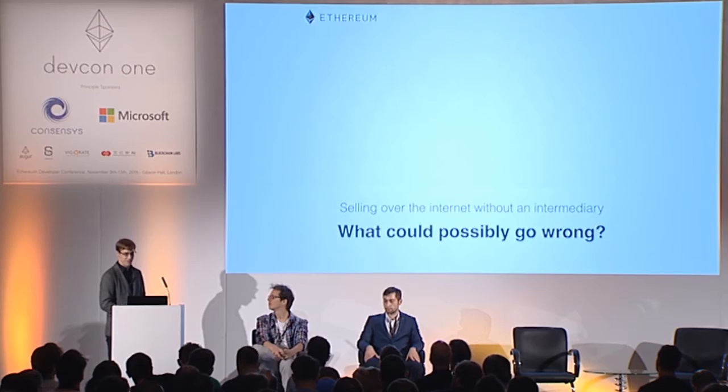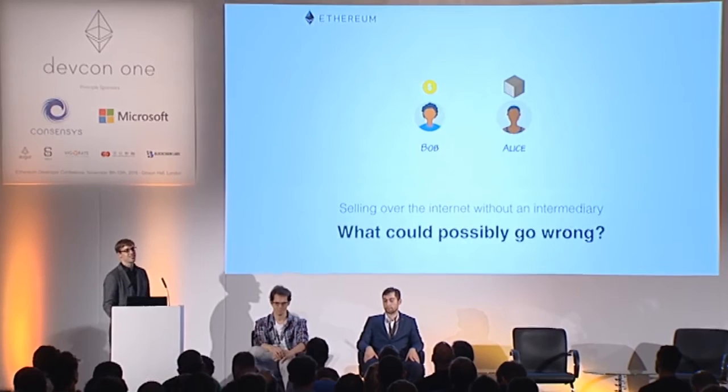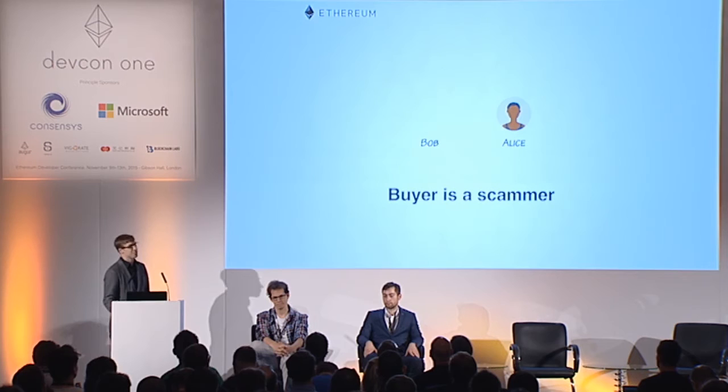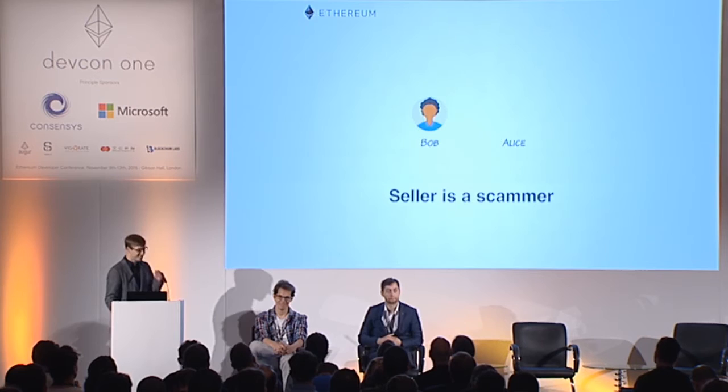We are trying to create an application that allows you to sell things over the internet. How would you usually do that? Bob has some money and wants to buy an item from Alice. One way would be for Alice to first send the item, but that could go wrong. The other way would be for Bob to first send the money, but that could also go wrong. What you usually do is use an escrow.